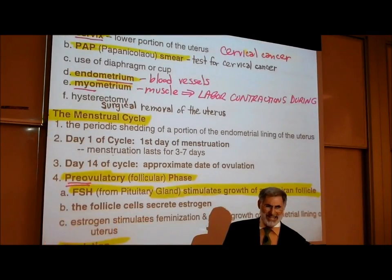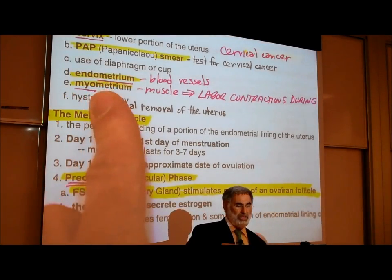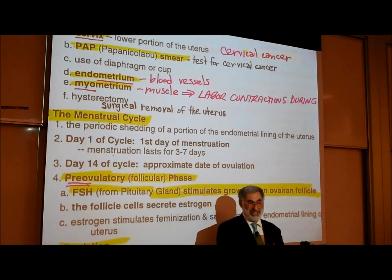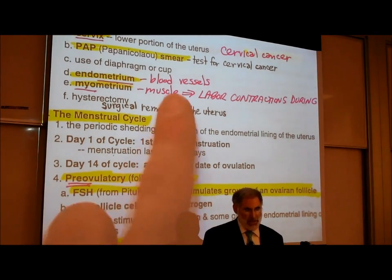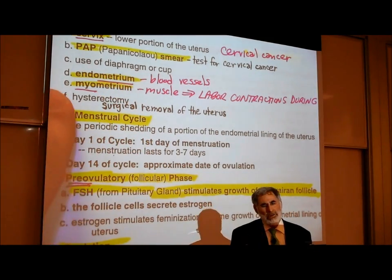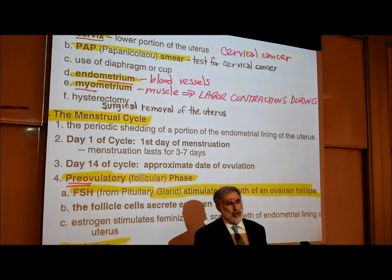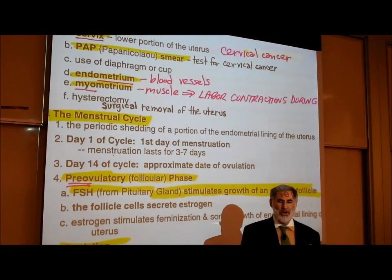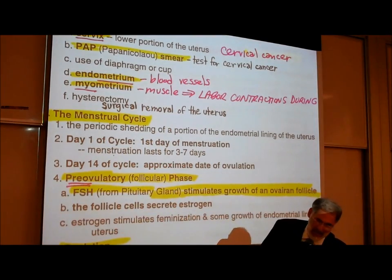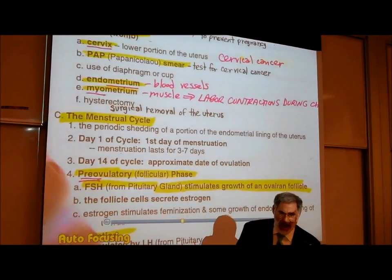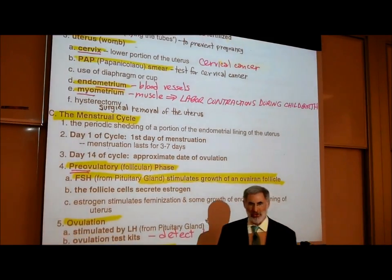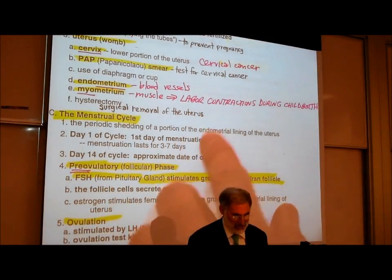The inner lining of the uterus is called the endometrium — 'metrium' means uterus, 'endo' means inside — and that's where blood vessels grow. The outer layer of the uterus is called the myometrium; 'myo' means muscle. This outer muscular wall is capable of contracting, and the myometrium contracts during childbirth — that's called labor contractions.